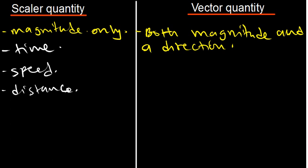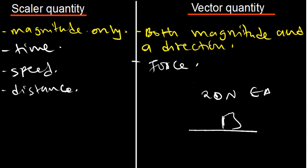Now what are some examples of vector quantity? When we think of force — maybe you are pushing an object, you are applying a force of 20 newtons east. That object is moving toward east. That is a vector quantity. When you think of a vector, you need to include a direction — very important. If you just say 20 newtons, that is not a vector because there is no direction.